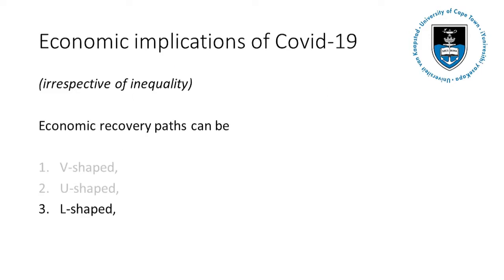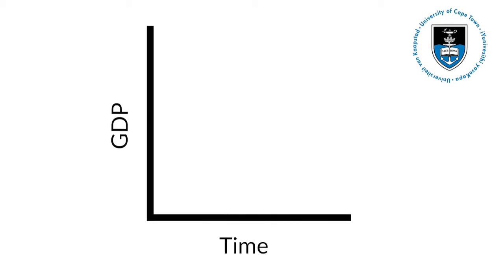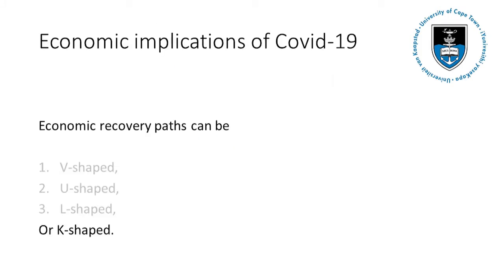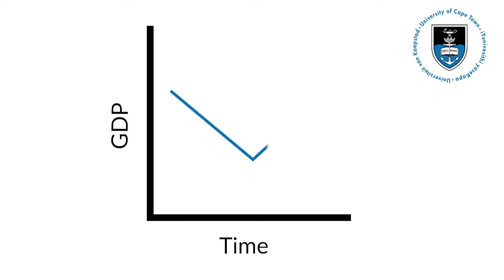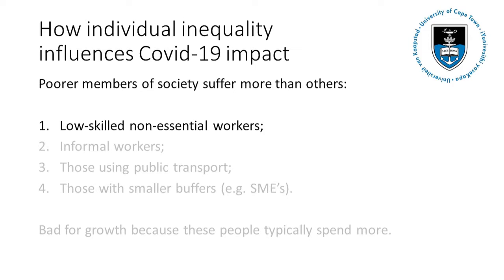An even worse scenario is the L-shaped recovery, meaning the economy will never really recover to its former glory. More and more economists have also been talking about a K-shaped recovery: a V-shaped recovery for the rich and a continuing decline for the poor. Why would that be a realistic scenario? Let's list a couple of reasons.